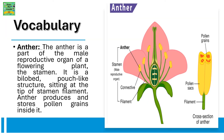A plant has two types of flowers: a male flower and a female flower. The male flower is called the stamen. A stamen has a part known as the anther. The anther is the part of the male reproductive organ of a flowering plant.